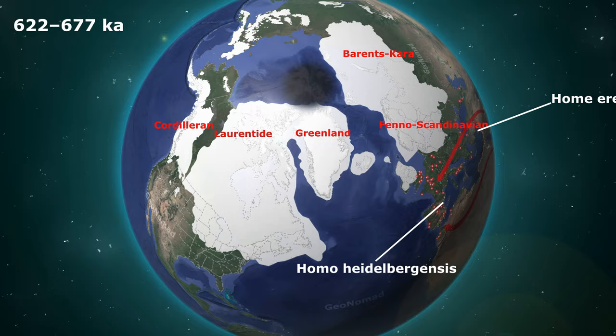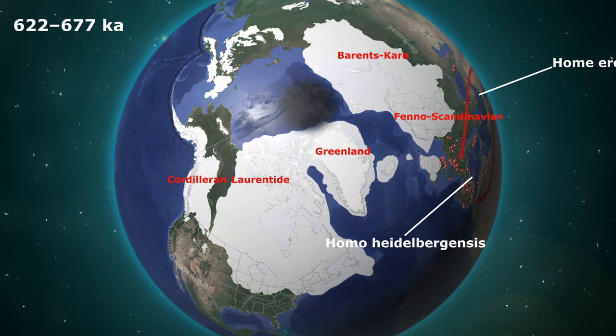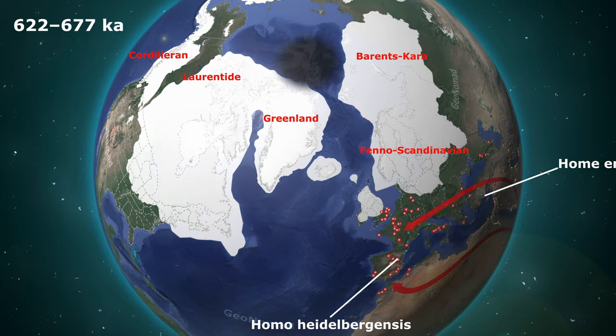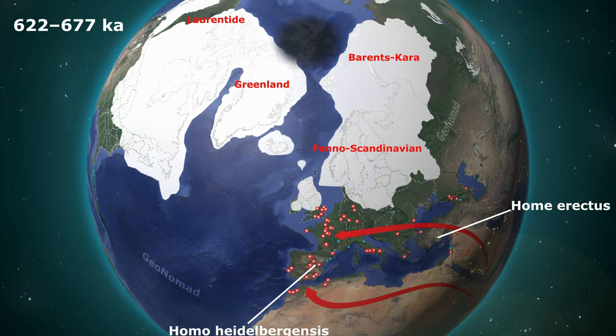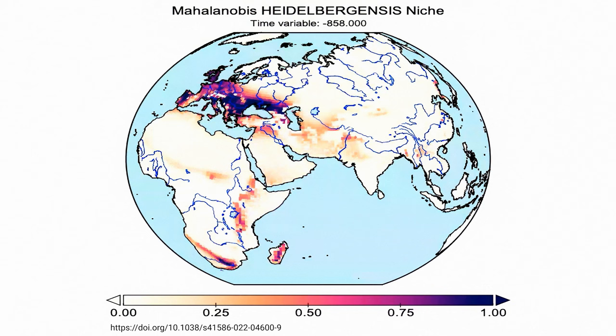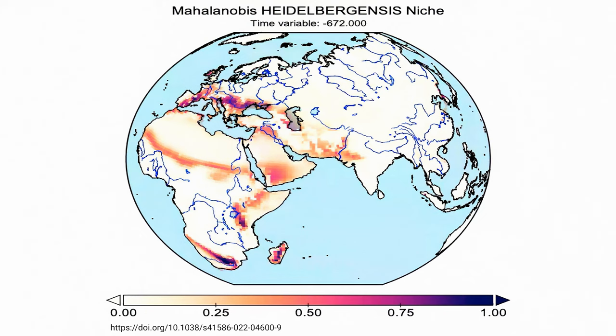During this time, glaciers were greatly enlarged to the extent that the Fenno-Scandinavian and Barents-Kara ice sheets merged. The European ice sheet covered all of Poland, Belarus was almost covered with glaciers, and glaciation progressed from Russian provinces to the eastern border of Ukraine. In Siberia, the ice sheet expanded to completely cover Russia's Krasnoyarsk province. Homo heidelbergensis and Homo erectus lived in Europe, and habitat suitability in Europe deteriorated significantly.